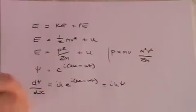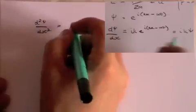Okay, we'll keep that. And now we're going to differentiate again. So we're going to take d 2 psi with respect to dx squared. And that means you bring down i k again. So now you're going to get i k squared times psi.